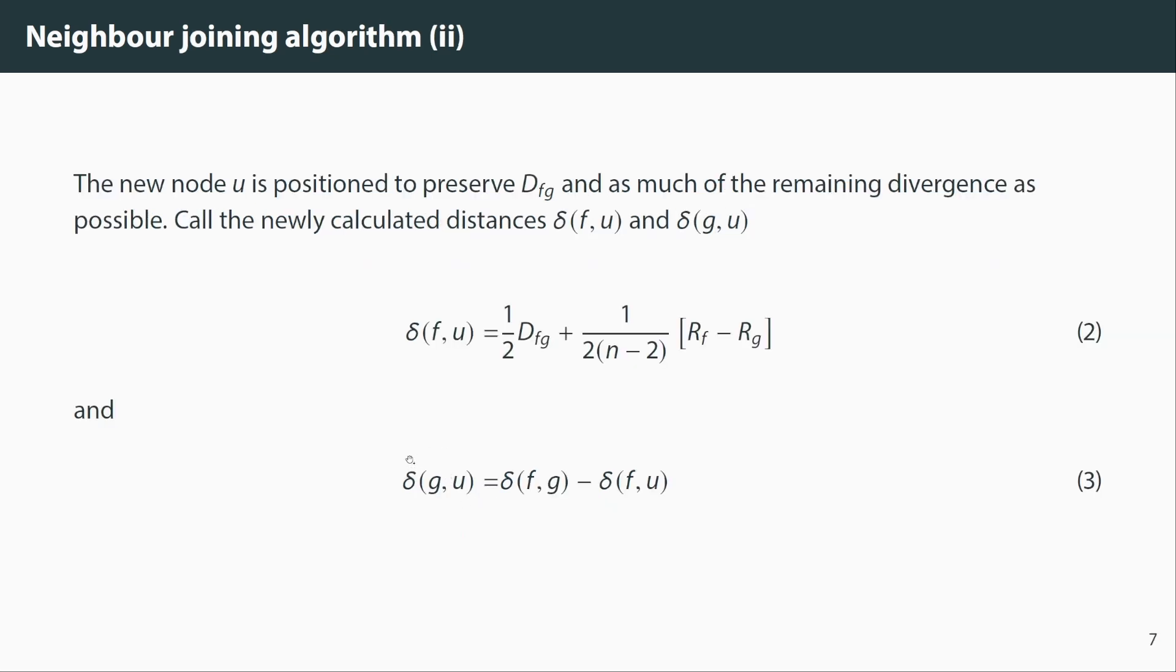The second part is what do we do with that u? So we're not going to put it halfway between the nodes like we did in UPGMA. It's positioned to preserve the distance between the two points that we're merging. And it's positioned to preserve as much of the remaining divergence as possible. So this is the first step of this.